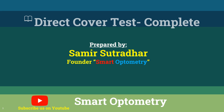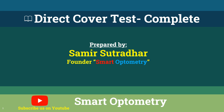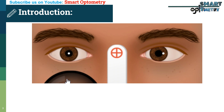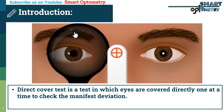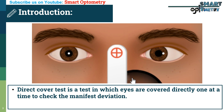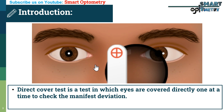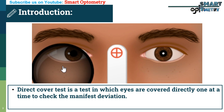Today I will discuss the Direct Cover Test. The Direct Cover Test is a test in which eyes are covered directly, one at a time, to check the manifest deviation.